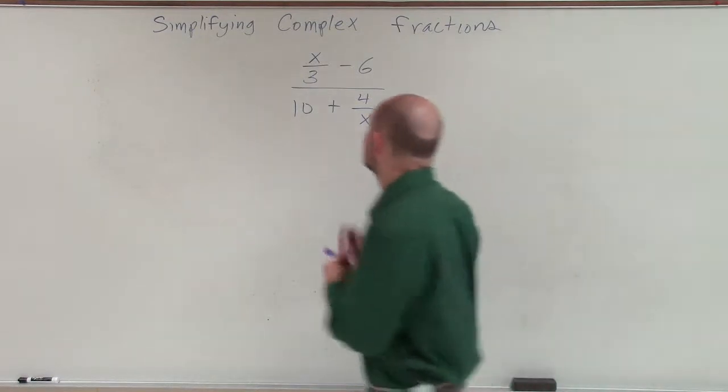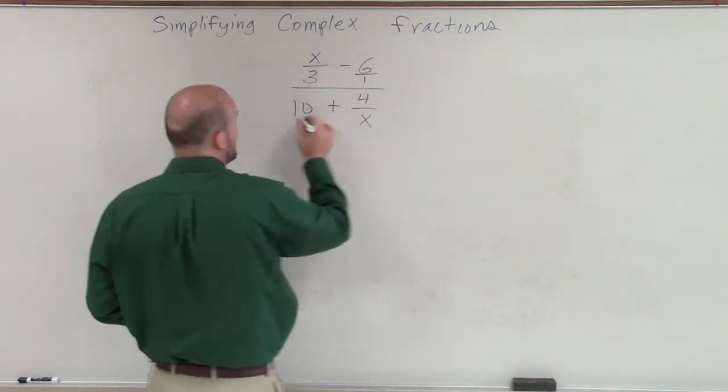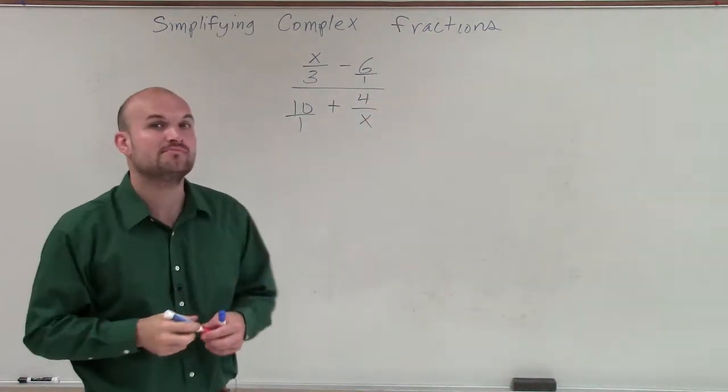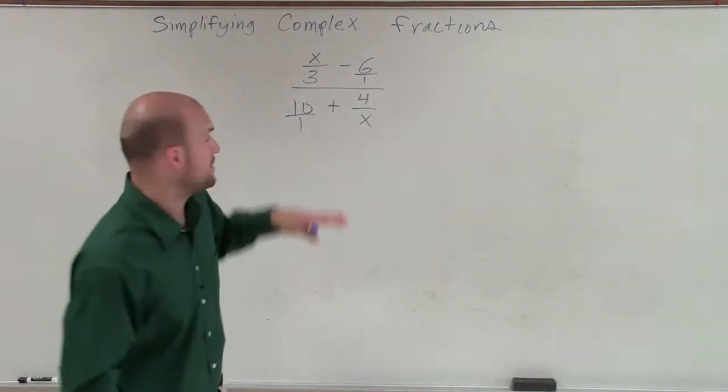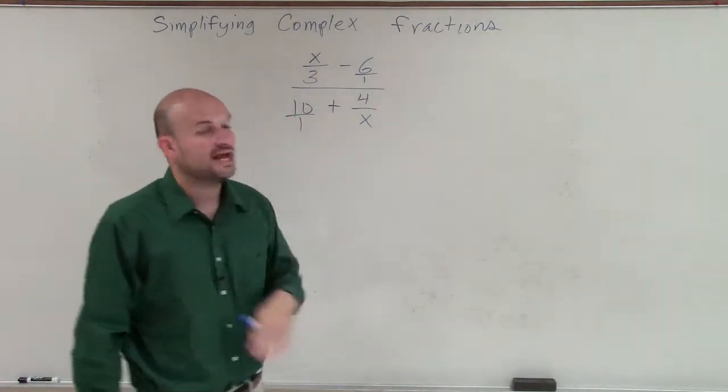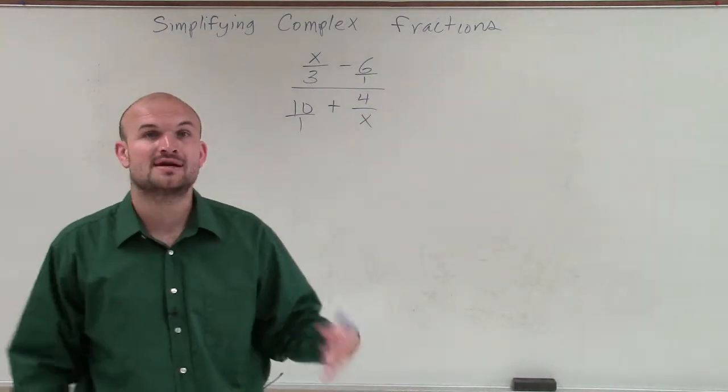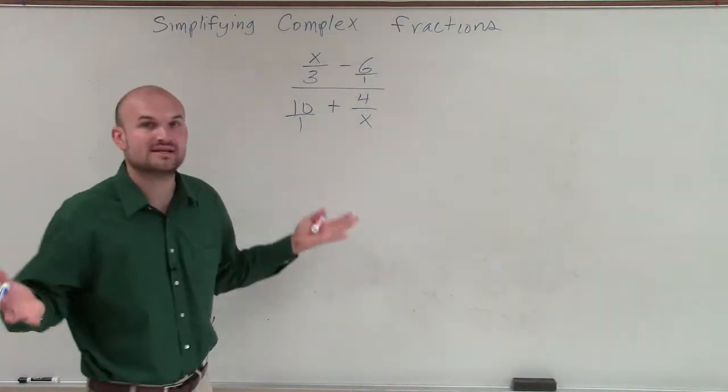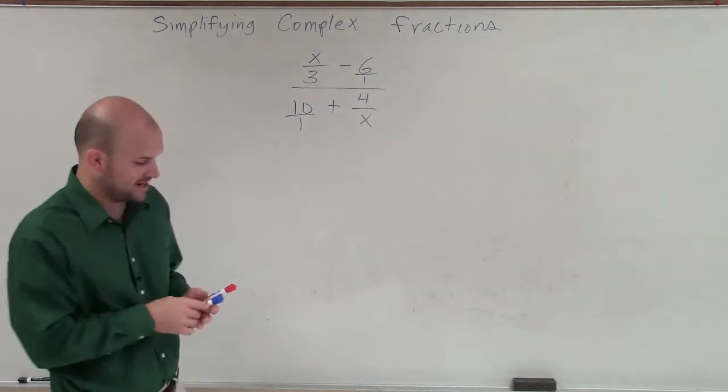What we can do is we can just look at the denominator of every single term. And if we find the common denominator, the least common denominator of every single one of our terms, and if we multiply every single term by that, well, what that's going to do is then we can combine all of them together and then simplify it from there.